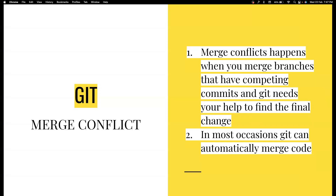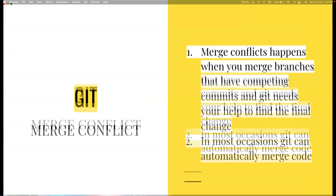Most developers will run away if they know there is a merge conflict — that's a real problem. But in most occasions, Git can automatically merge your code. Resolving merge conflicts can be a nightmare if you just use the CLI. You can do it, but it's going to be very difficult. Using IntelliJ, it's going to be very, very simple.